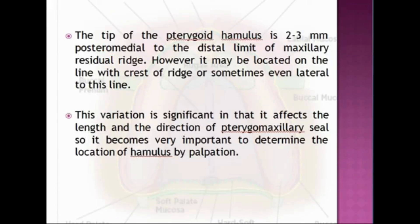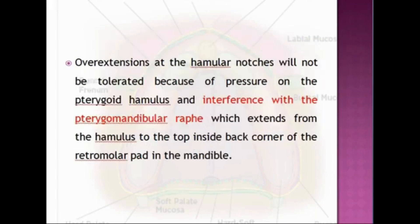The tip of the pterygoid hamulus is 2 to 3 mm posterior and medial to the distal limit of the maxillary residual ridge; however, it may be located on the line with the crest of the ridge or sometimes even lateral to it. This variation affects the length and direction of the pterygo-maxillary seal, making it important to determine the location of the hamulus by palpation. Over-extensions at the hamular notches will not be tolerated because of pressure on the pterygoid hamulus and interference with the pterygo-mandibular raphe, which extends from the hamulus to the top inside back corner of the retromolar pad.